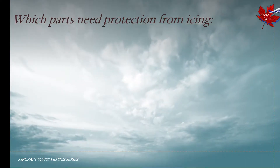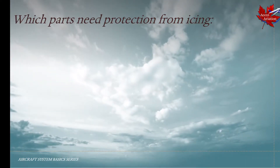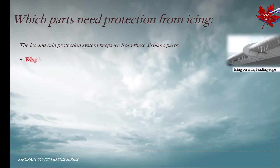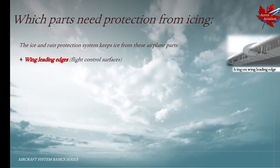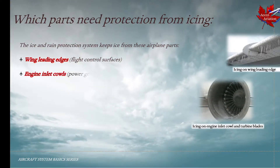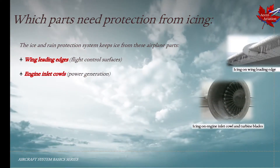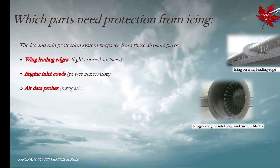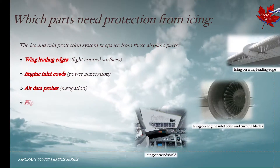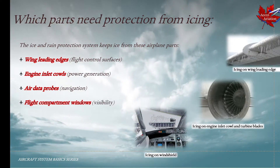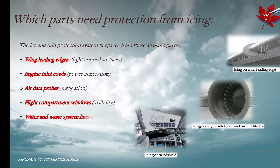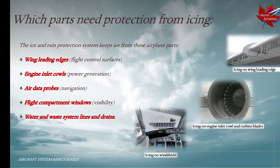So which parts of the aircraft need protection from icing? The wing leading edges, to protect the flight control surfaces; the engine inlet cowls, to prevent icing from affecting power generation; air data probes, such that navigation is not affected by icing; the flight compartment windows, such that visibility isn't affected by icing; and water and waste system lines and drains as well.